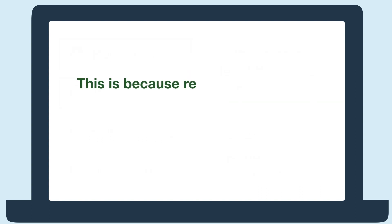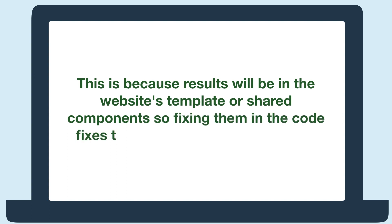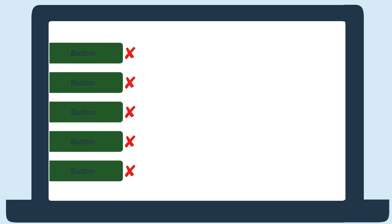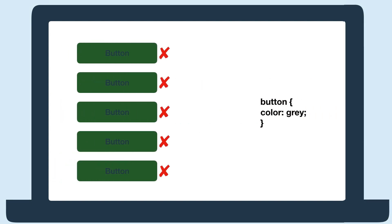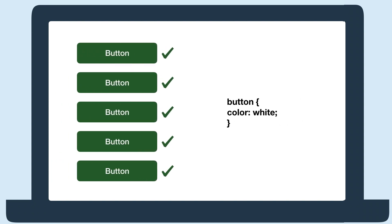This is because a lot of the results will be in the website's template or shared components, so fixing them once in the code will fix the issue on every page it's on. For example, if a button has a contrast error and the button is on 30 pages, then fixing it in the code will fix 30 errors.